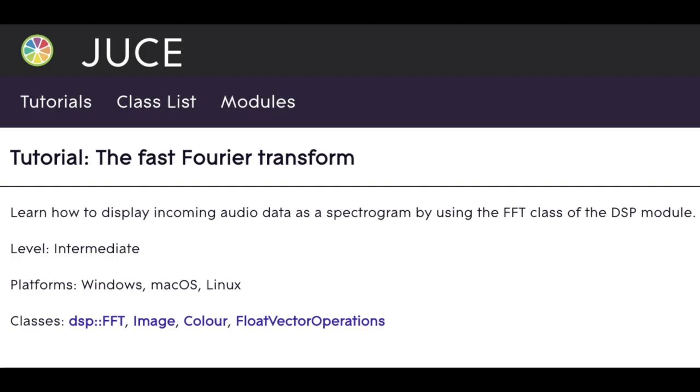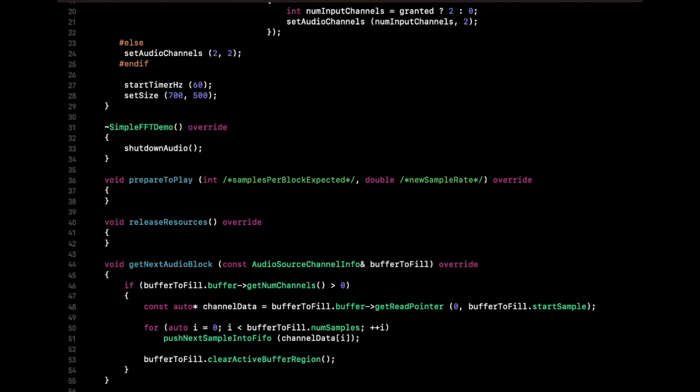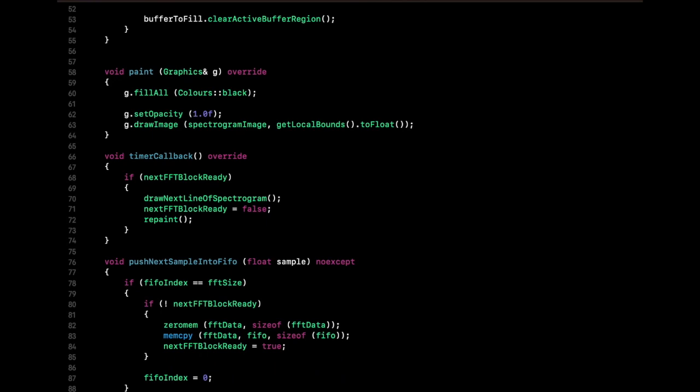By following JUCE's basic FFT tutorial, we could code a simple spectrogram that takes an input from a computer's microphone and computes a Fourier transform, and finally plotting them in a time-frequency-amplitude domain. Let's take a look at the specifics.